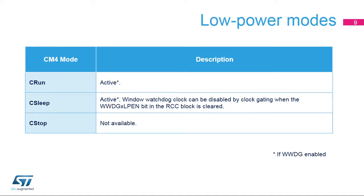The window watchdog is active when the Cortex-M4 is in CRUN and C-Sleep modes. It is not available in stop or standby modes. In C-Sleep mode, the window watchdog clock can be disabled by clearing the corresponding low-power enable bit located in the RCC block.